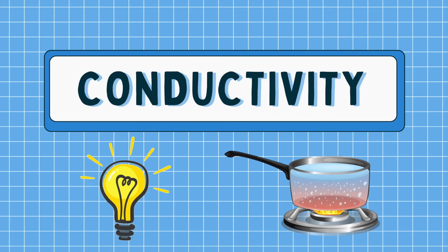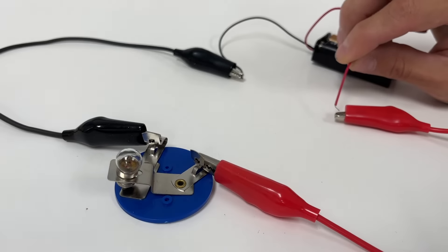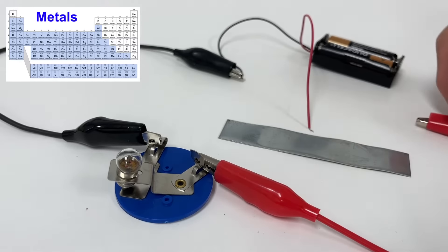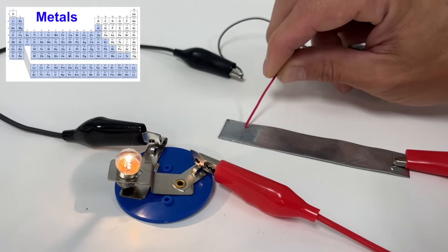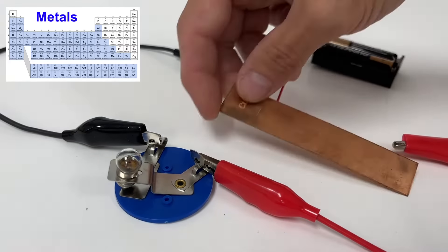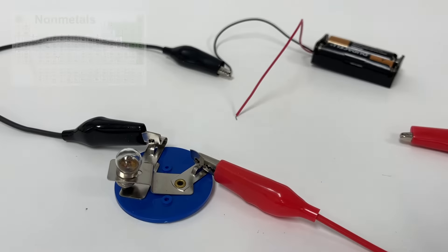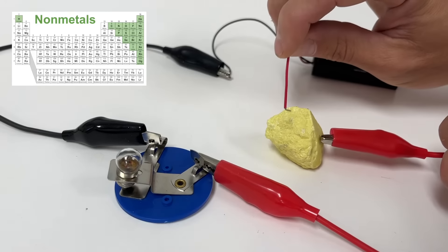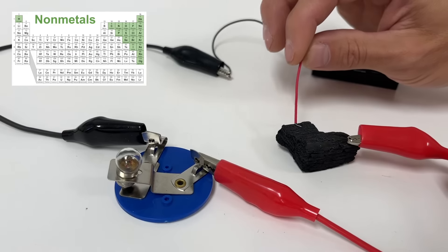Now let's take a look at their conductivity. Here we have a circuit set up where if you connect the wires, the light bulb will turn on. So we're going to take a metal and place it in between, and as you can see, it still turns on because electricity can flow through the metal. Here's some copper — testing it again, and the light bulb turns on. Now if we take some non-metals, like sulfur, the light won't turn on because electricity can't flow through it. Same thing here with carbon.